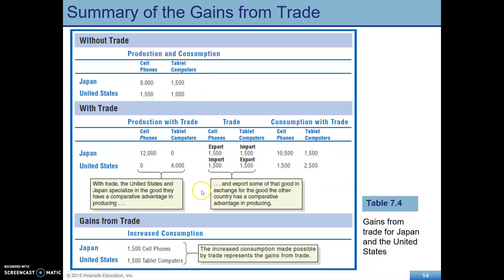Japan now has 1,500 more cell phones than before — 10,500 versus 9,000 — and the U.S. has 1,500 more tablet computers than before — 2,500 versus 1,000. The other two quantities remain the same, but you can clearly see both countries are better off. Gains from trade!